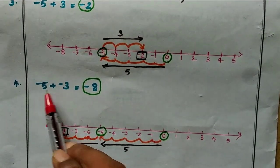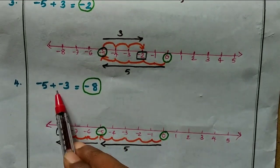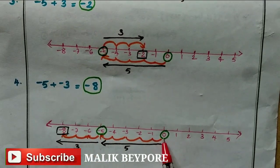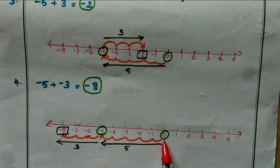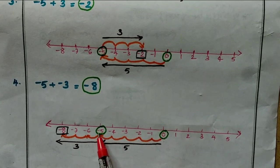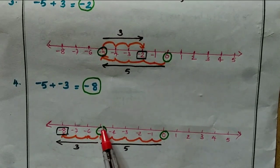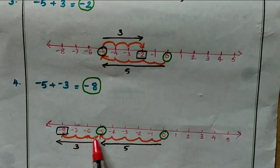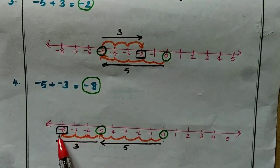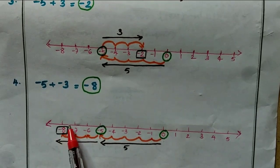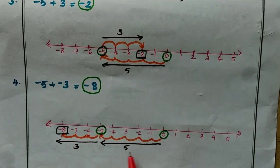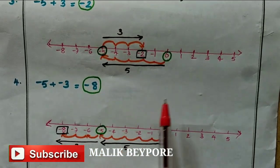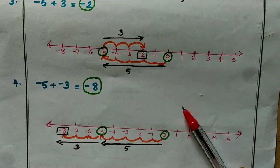Next example: minus 5 plus minus 3 equals dash. Start from 0. The first number is minus 5, so move left to position 5: 1, 2, 3, 4, 5. This is the position of minus 5. Now add minus 3 — move left again: 1, 2, 3. Both are negative numbers, so you get minus 8. Minus 5 plus minus 3 equals minus 8. Thanks for watching — please wait for the next video!